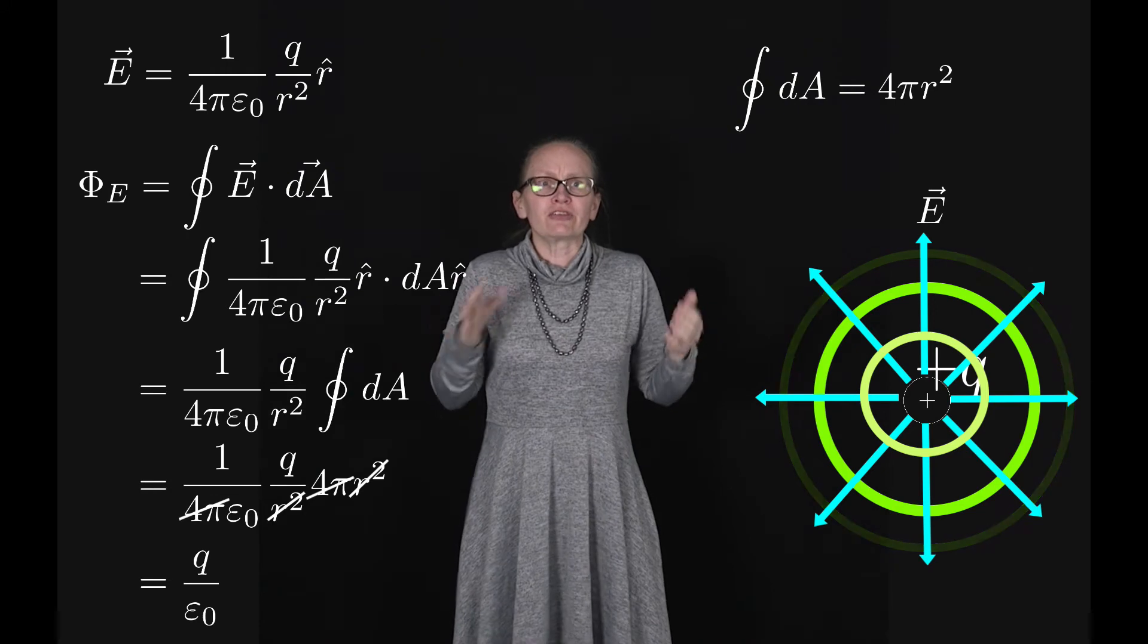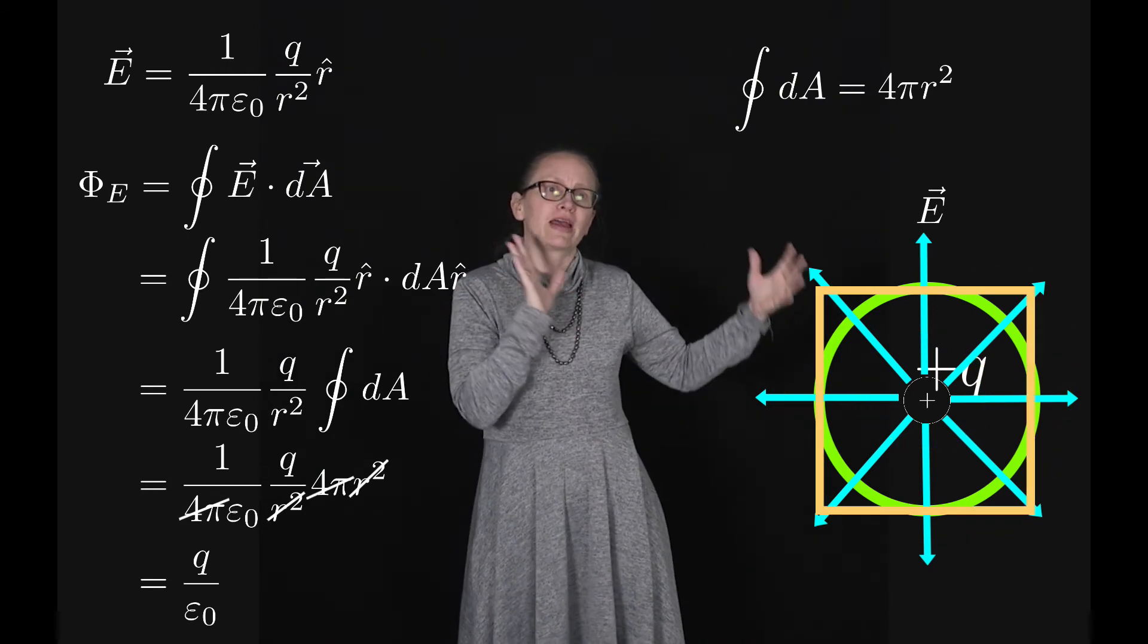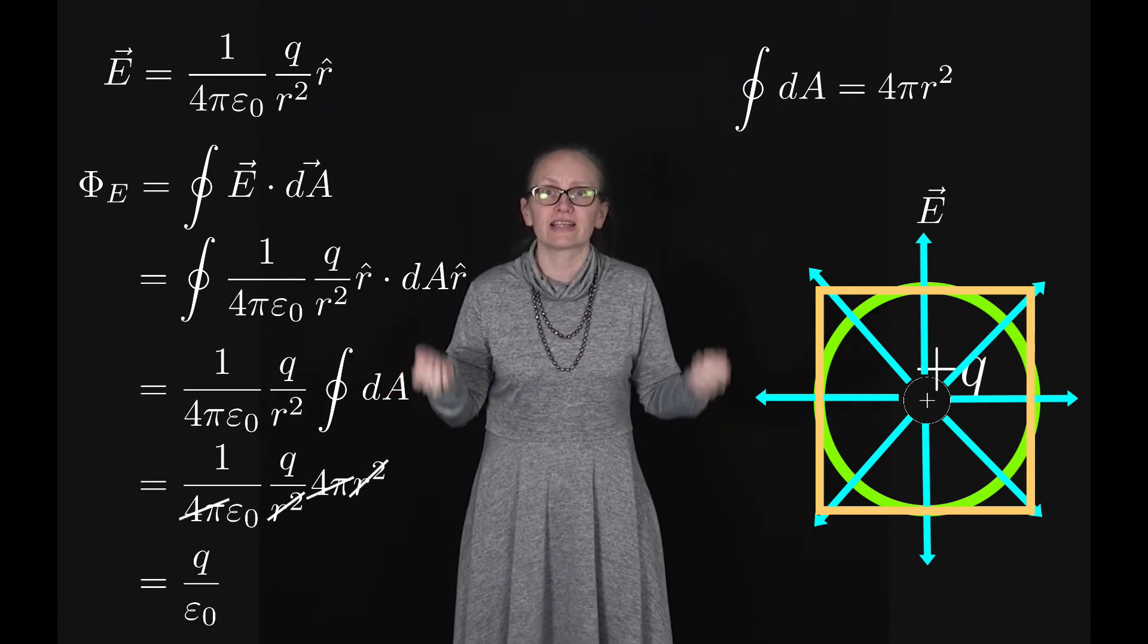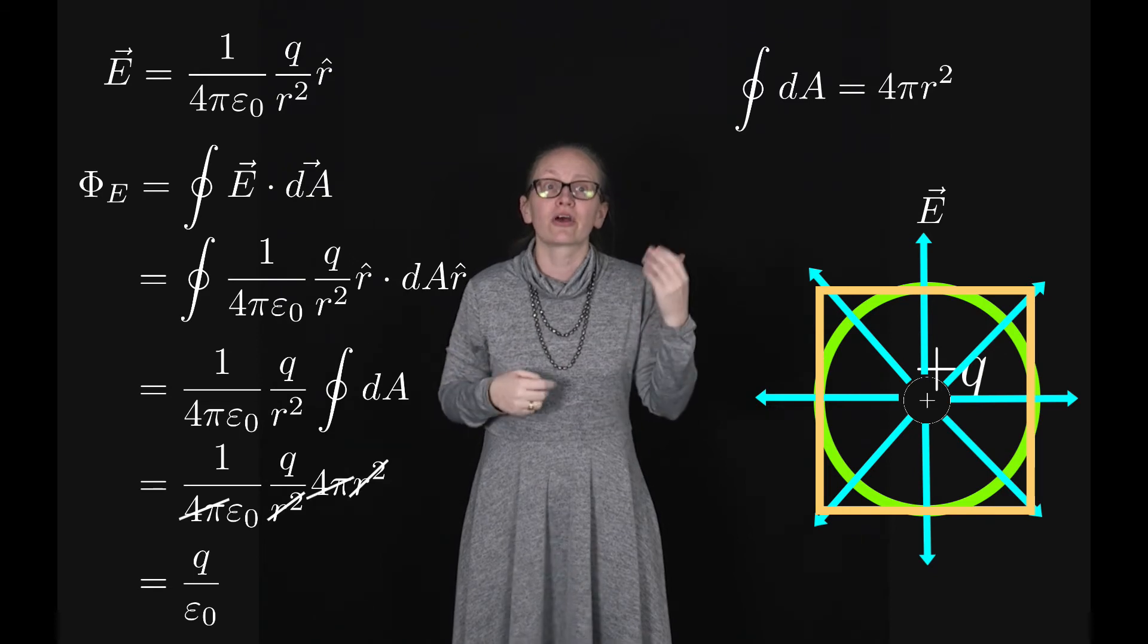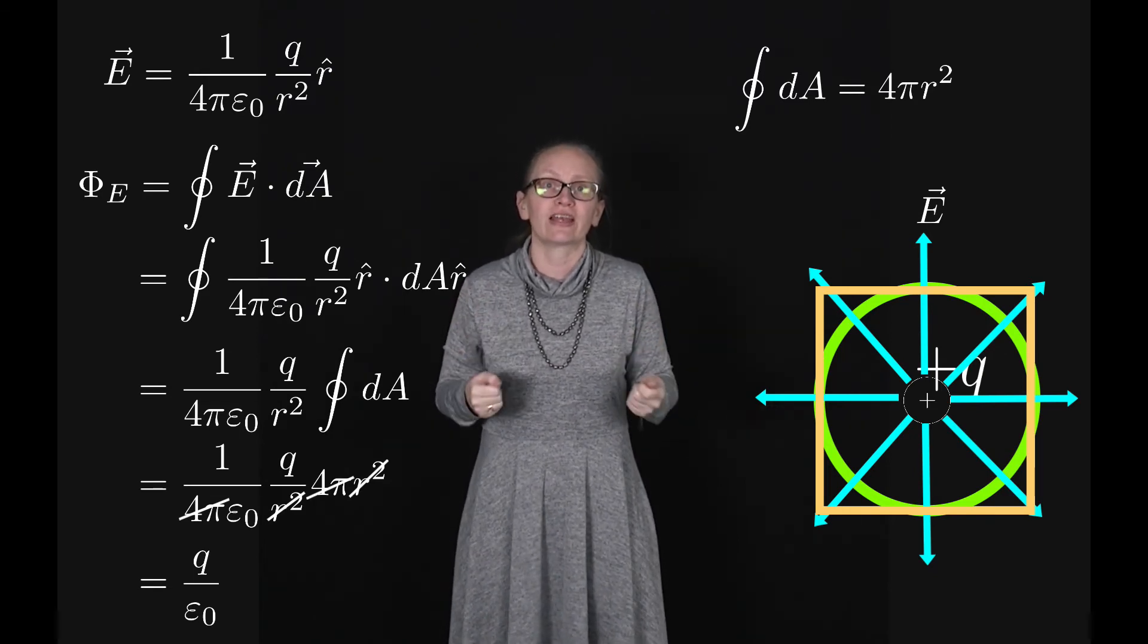Now imagine if we tried to change its shape a little bit. So let's morph our sphere into a cube. In this case once again we've still got the same number of field lines cutting through the surface, and so again our electric flux has not changed.